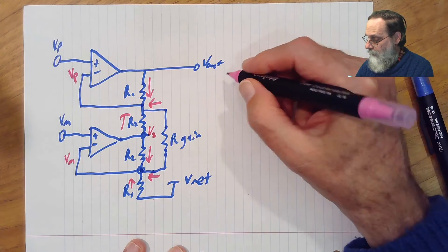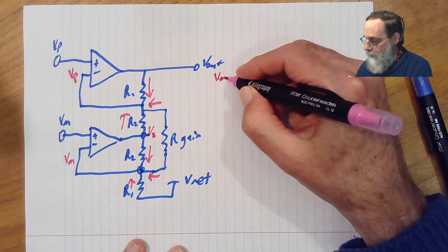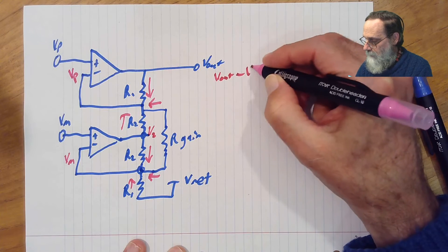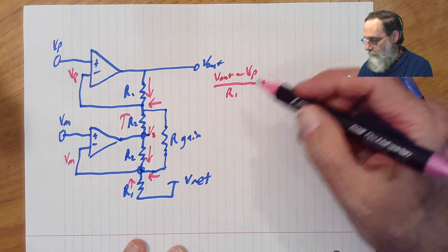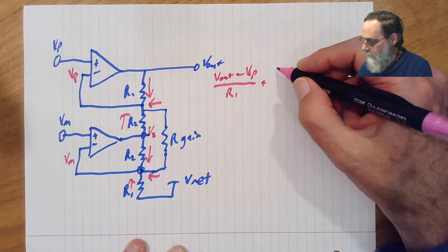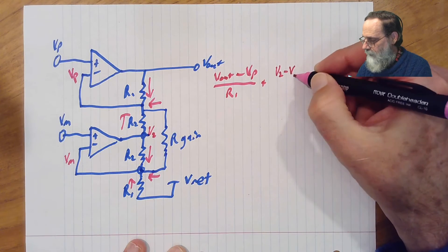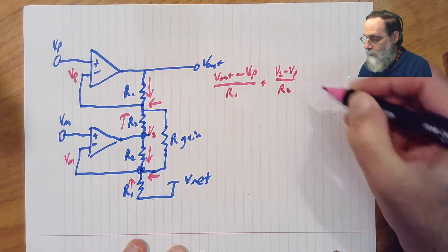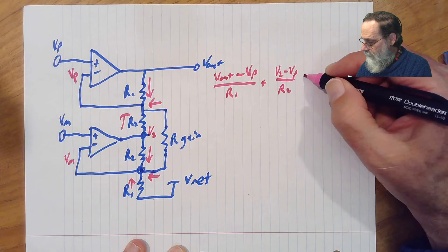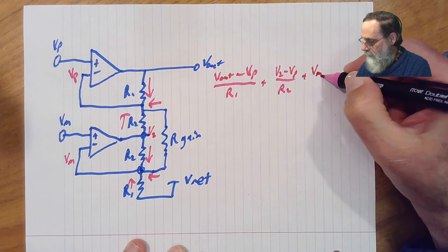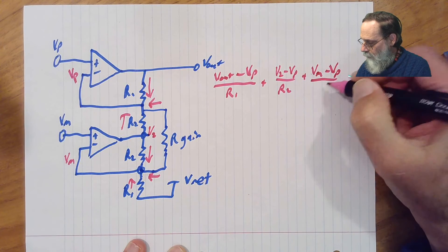we have vout minus vp over r1 plus v2 minus vp over r2 and plus vm minus vp over r2 minus vp over r1.